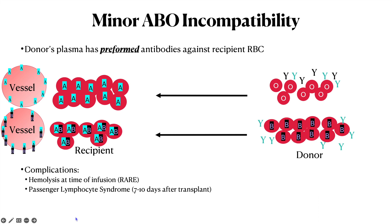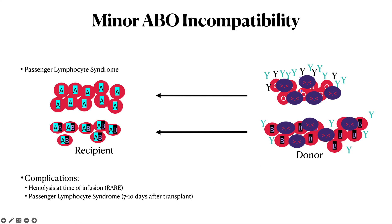You can get passenger lymphocyte syndrome, which occurs generally seven to ten days after transplant. In the donor unit, you have lymphocytes that recognize the A antigen, whether on the red blood cells, on the vessels, or on the AB portion. These lymphocytes then become plasma cells and secrete antibodies against these antigens, which is why it occurs later.